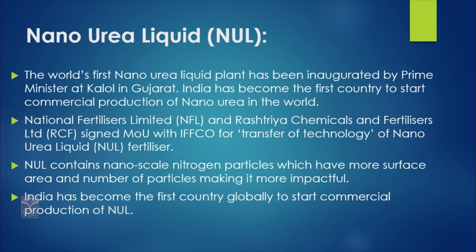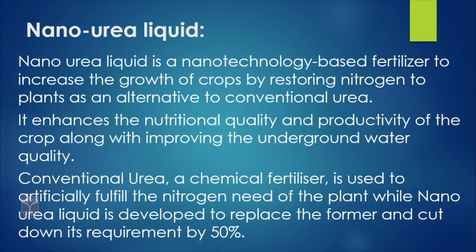Why are we using nano urea? Because nano scale nitrogen particles have maximum surface area when compared with general nitrogen particles. India has become the first country globally to start commercial production of NUL. Nano urea liquid is a nanotechnology-based fertilizer to increase the growth of crops by restoring nitrogen to plants as an alternative to conventional urea.